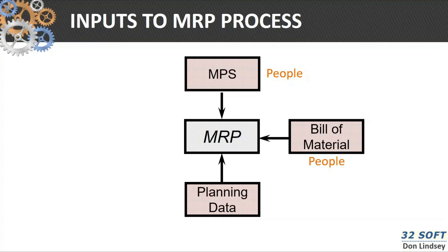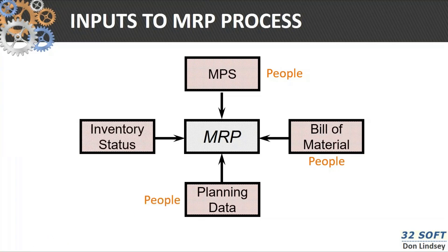Then you have the planning data that the planners and buyers are responsible for — the lead times, the order policies, etc. And then finally, you have inventory status: the warehouse, quantity on hand, cycle counting — all that information about what the on-hand quantity is.